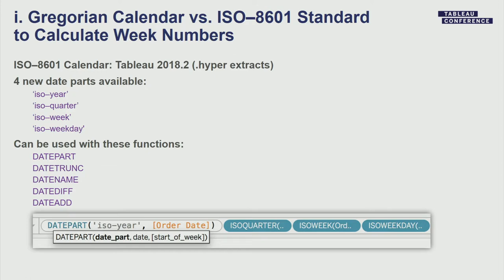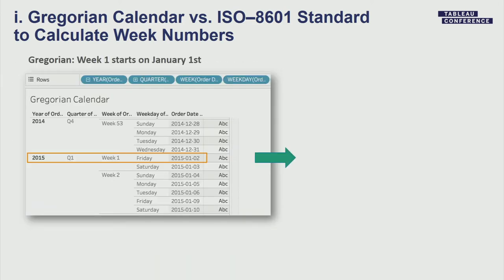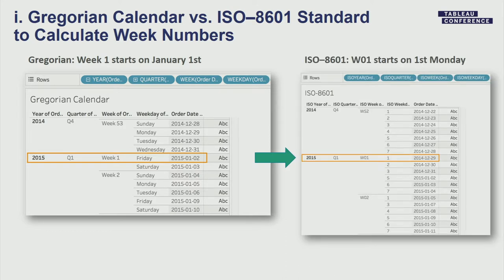For example, in a Gregorian calendar, the first week of the year begins on January 1st even if that's a Wednesday. So the last day of 2014 — December 31st — ended up in week 53 of the Gregorian calendar. However, in the ISO 8601 calendar using ISO year, quarter, week, and weekday, the very first day of the 2015 calendar year is day one of 2015, and that actually fell on December 29th, 2014 — the first Monday of the first week of the year. This new feature was added in 2018.2 for Hyper extracts.